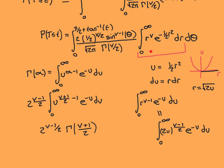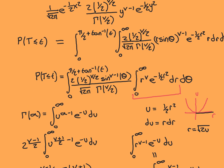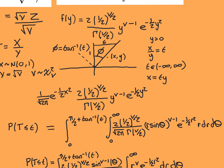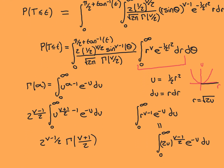So this entire r integral boils down to 2^((ν−1)/2) × Γ((ν+1)/2). Notice how hopeful this looks — the Γ((ν+1)/2) is exactly what we need in the final PDF of the t-distribution, and this factor will nicely cancel with terms we already have. We'll save this joyous simplification for the next video and take a break here.